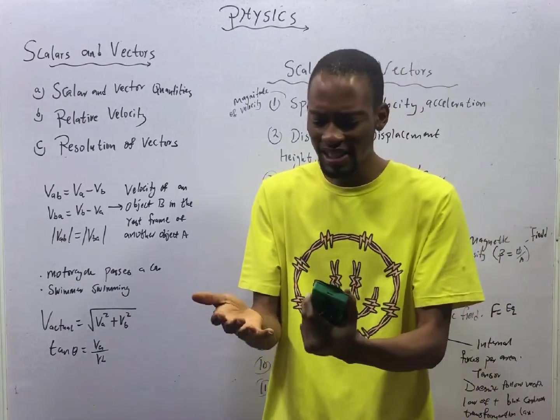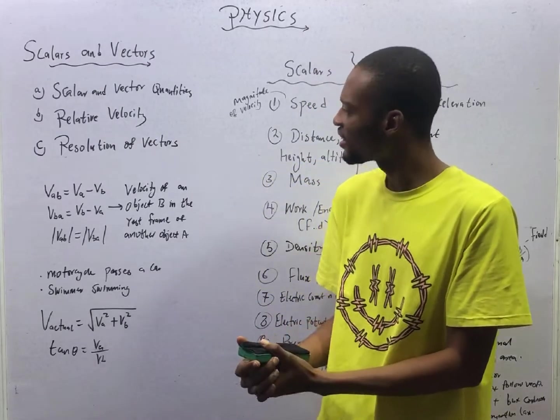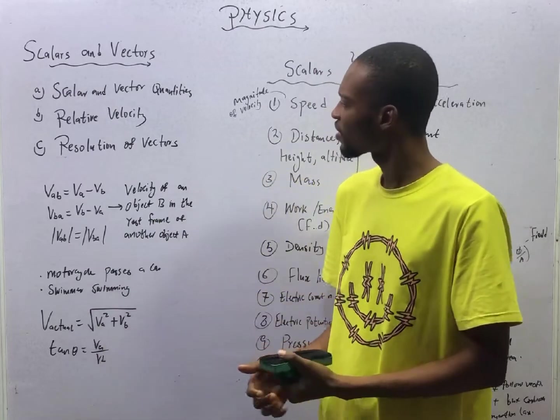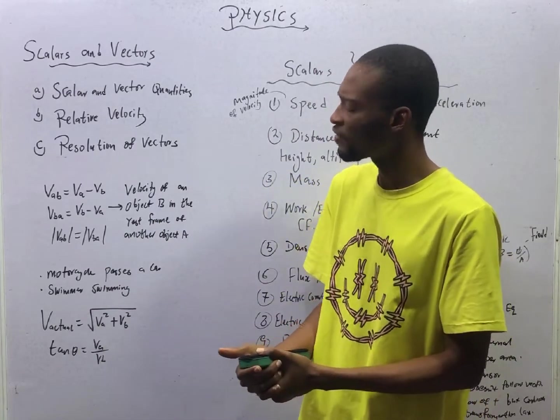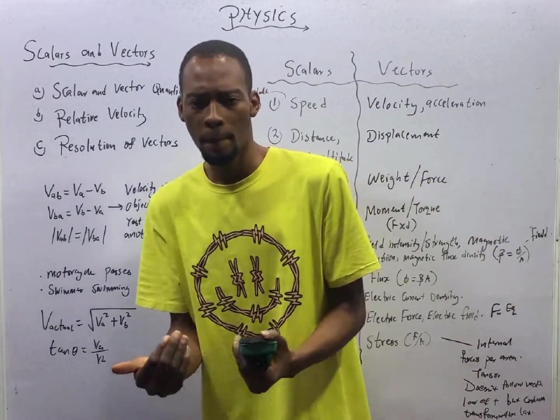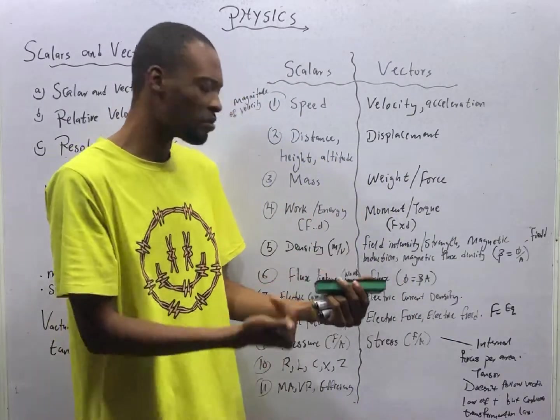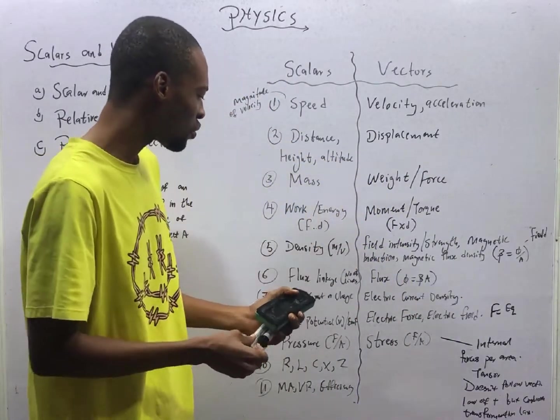Physical quantities are quantities that can be measured and they can be fundamental or derived. Out of all these fundamental and derived quantities, we have them as vectors and scalars. They can be divided into vector and scalar quantities.